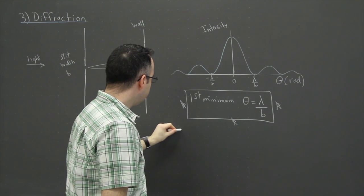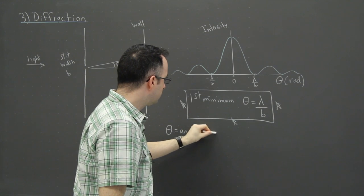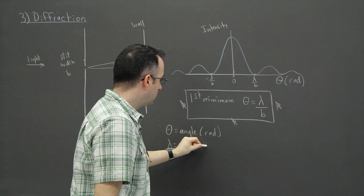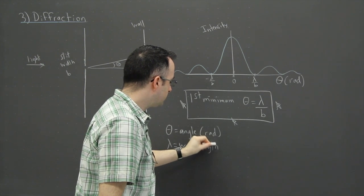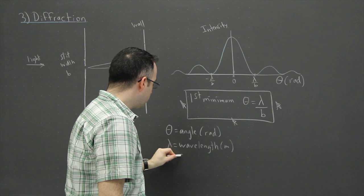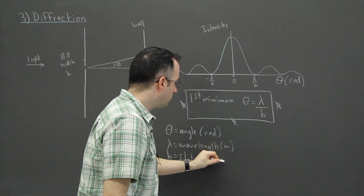So now we better define things. So theta is your angle in radians. Lambda is your wavelength of your light. In this case, it's going to be in meters, and B is going to be your slit width. That'll also be in meters.